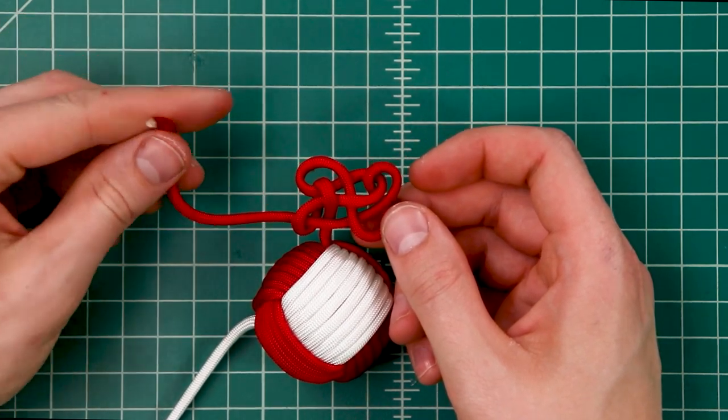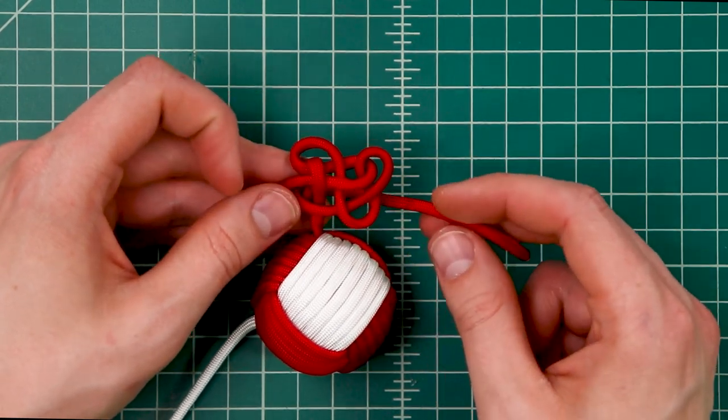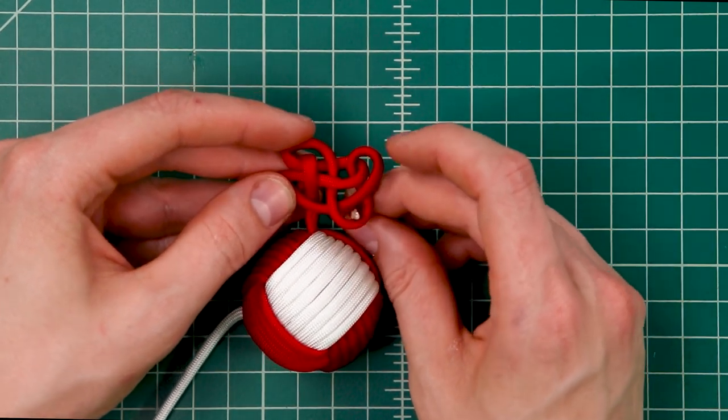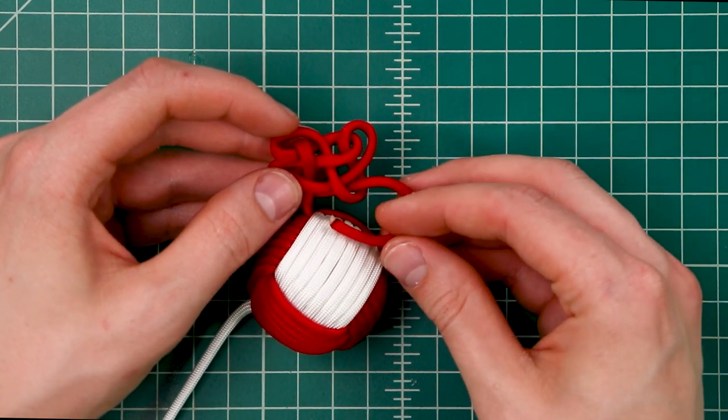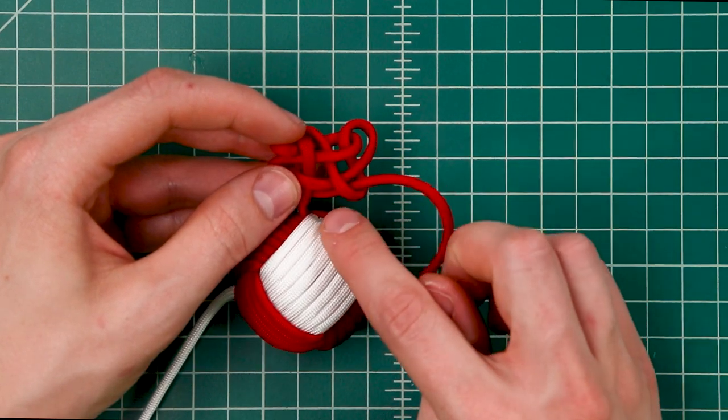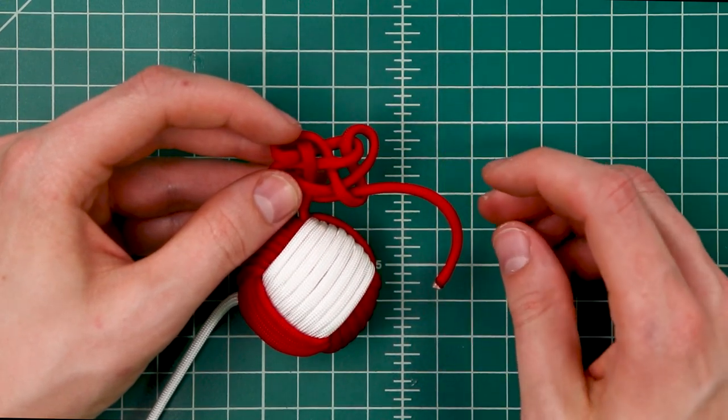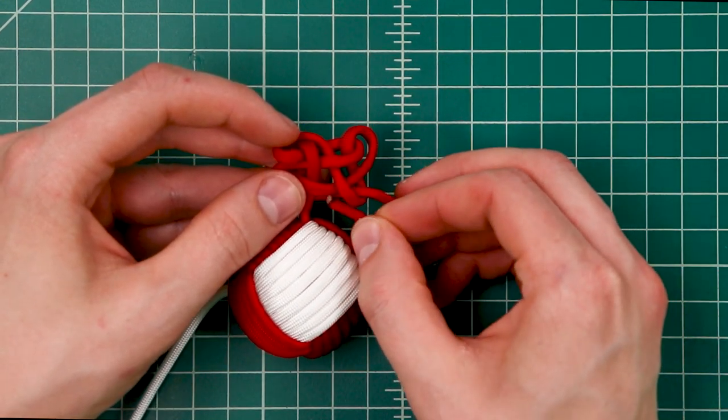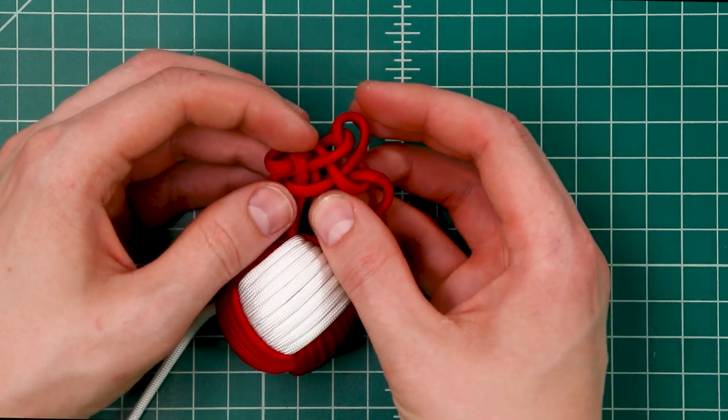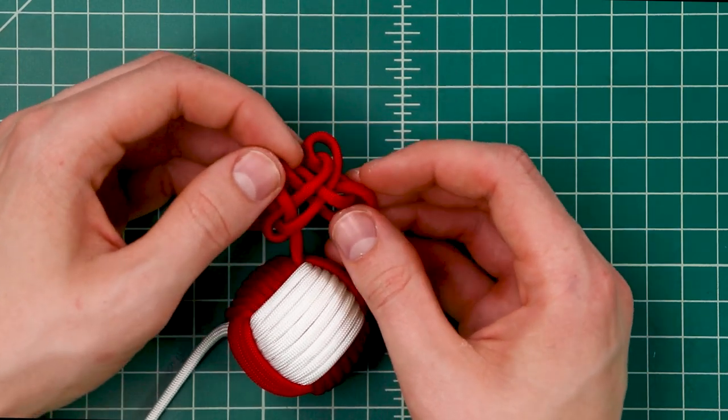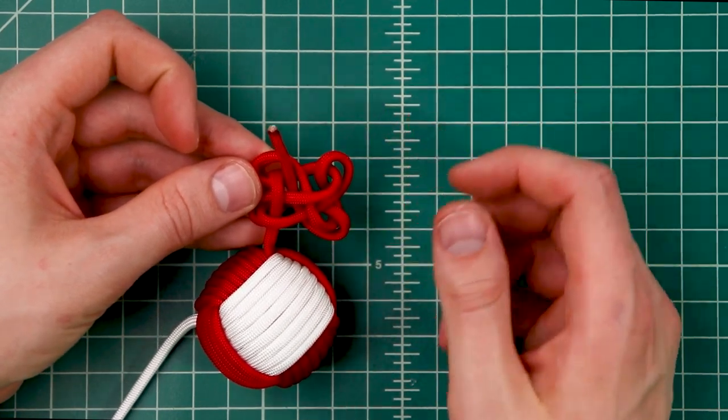Now our working end, one more time, we're going to take it back across the knot underneath to come up through this loop again. One final step to finish it off. Bring our working end around. We're going to go over the top of that cord and then underneath these middle two and out the other side of the knot. Going over that first one, underneath these middle two and out the other side right there. Now it's all symmetrical and we can tighten that down. Try to tighten it as close as you can to the monkey fist itself.